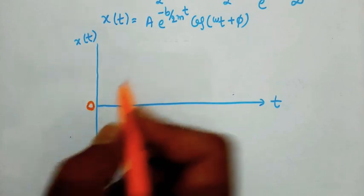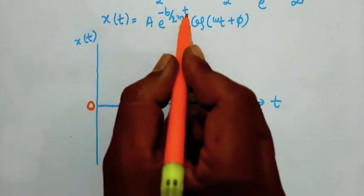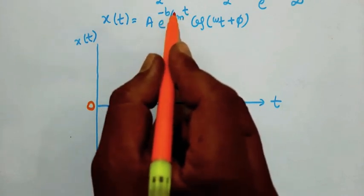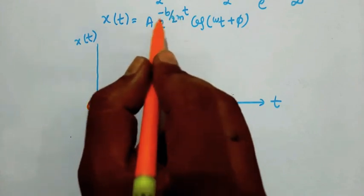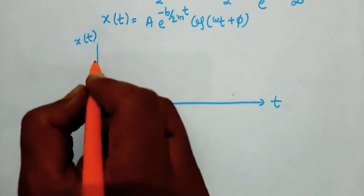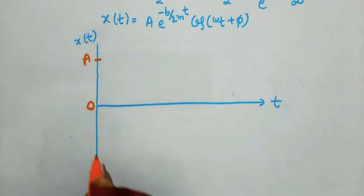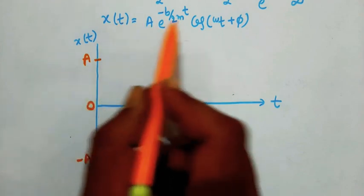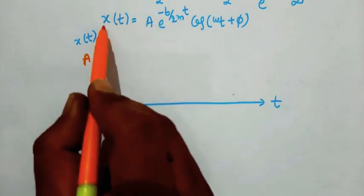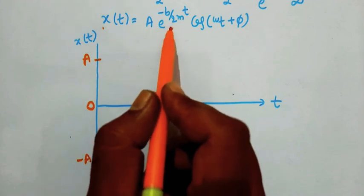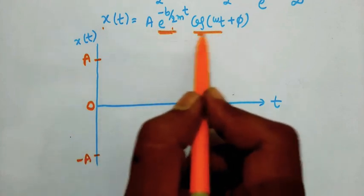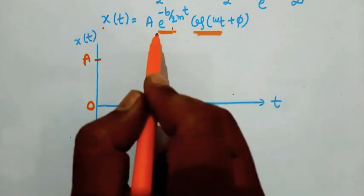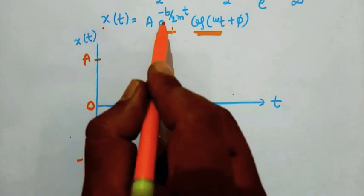At t equals 0, the amplitude is maximum — e to the power of minus B by 2M into 0 equals e to the power of 0, which is plus A and minus A. If t increases, the displacement is decreasing exponentially and it is periodic. So it decreases both periodically and exponentially. The amplitude is decreasing and the energy is also decreasing.